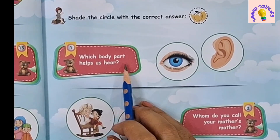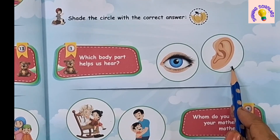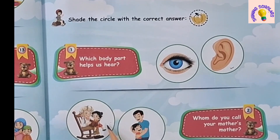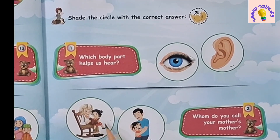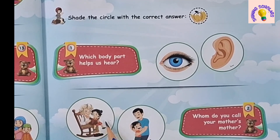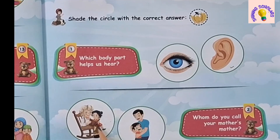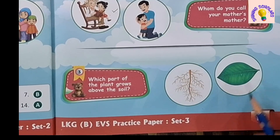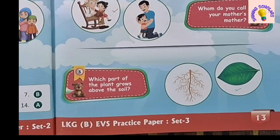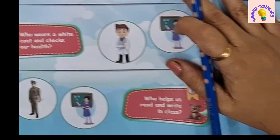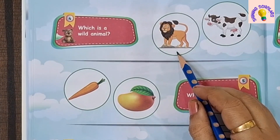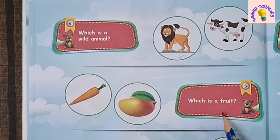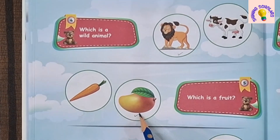Set 3, first question: Which body part helps us to hear? Ear helps us to hear. Whom do you call your mother's mother? This picture shows the elderly woman who is called your nanny or grandmother — she is your mother's mother. Which part of the plant grows above the soil? Leaf grows above the soil. Which animal is a wild animal? Lion is a wild animal, whereas cow is a domesticated animal. Which is a fruit? Mango is a fruit.